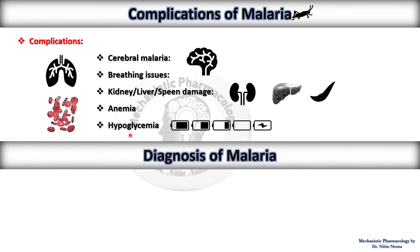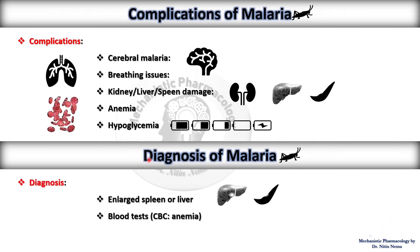Coming towards its diagnosis, malaria is diagnosed relatively easily. Visual observation by the doctor — such as an enlarged spleen or liver — is one of the prior indications for diagnosis. Blood tests like CBC or anemia screening are also done to confirm whether it is malaria or not.